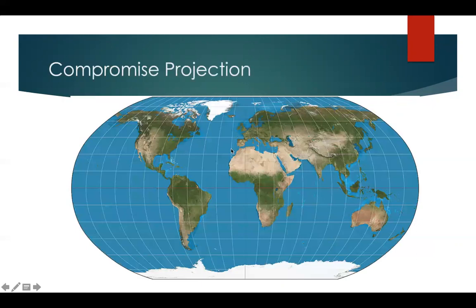Finally, we have compromise projections. This is a Robinson projection, which is an example of a compromise projection, and it was used for a long time by National Geographic to make maps that look nice. This doesn't preserve angles or area, but it looks decent.